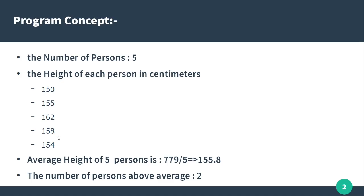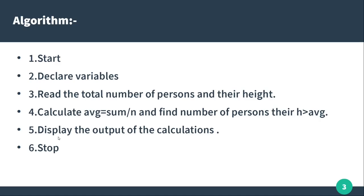Basically what we will do is declare variables: height array, number of persons above average height, sum divided by n, and average. Then we add the height of each person, with the dimensions available, and compare each height against the average.